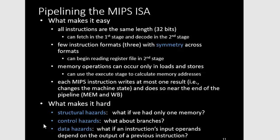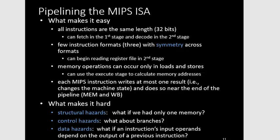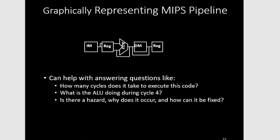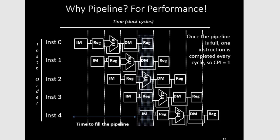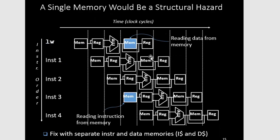However, pipelining also has hazards — you can't always have an ideal pipeline. There are structural hazards, control hazards, and data hazards. A structural hazard occurs when two different instructions need to use the same resource at the same time — for example, if there were only one memory for both instructions and data.